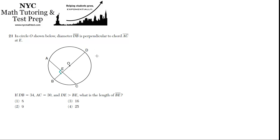DB is 34 — that's the whole diameter. And by the way, what's the radius if that's the case? The radius must be half of that, so it must be 17. So let's keep that in mind.